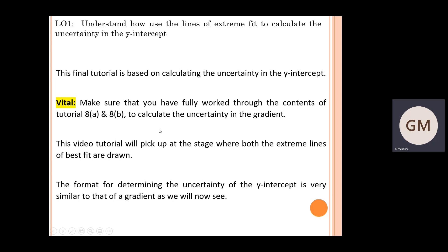If you haven't seen them yet, stop, go back, and then jump back in here again. This video tutorial will pick up at the stage where both the extreme lines of best fit have been drawn — that is your maximum and your minimum. The format for determining the percentage and absolute uncertainty in the y-intercept is very similar to that of the gradient, as we'll see shortly.